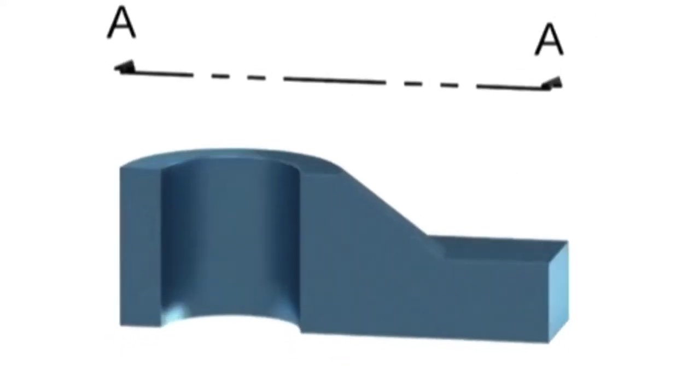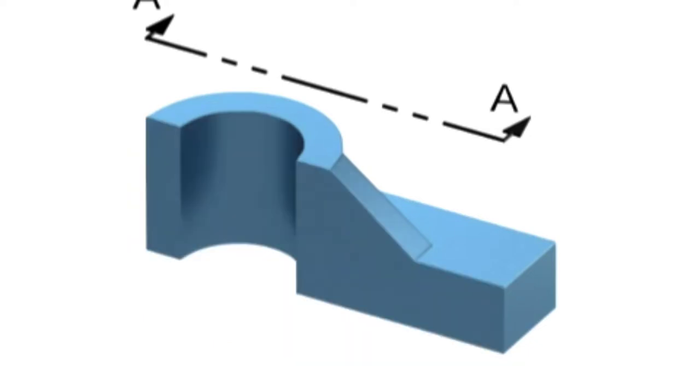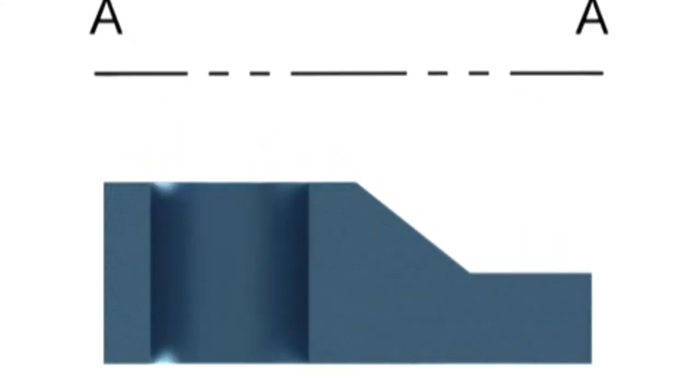There are a number of different types of sectional views that can be drawn. This is a full section view, generated when the cutting plane passes through the entire part.